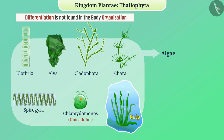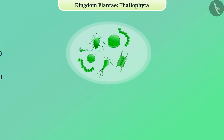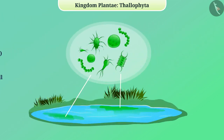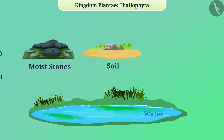Thallophytes are all aquatic plants. They can perform photosynthesis due to the presence of chlorophyll and thus make their own food — that is, they are autotrophic. Some algae are very small and form layers on the surface of water; these are called phytoplankton. Apart from water, thallophytes are also found in moist stones, soil, and wood.